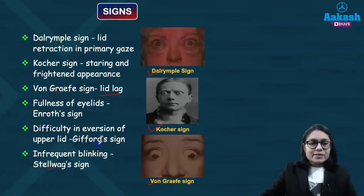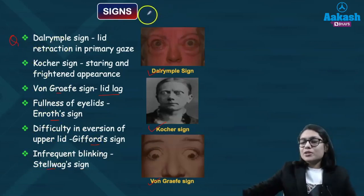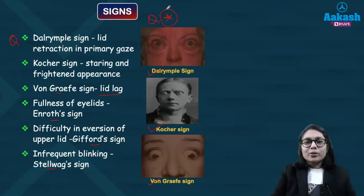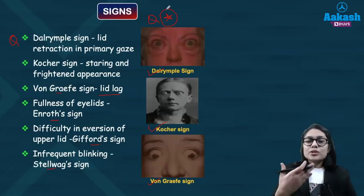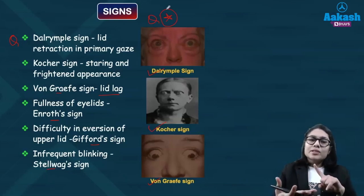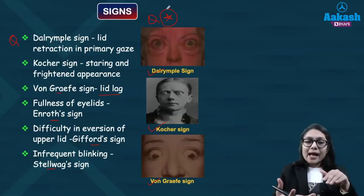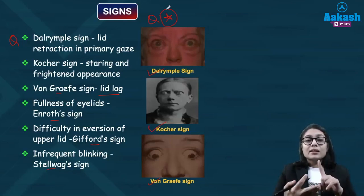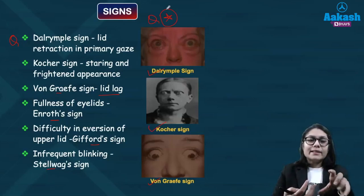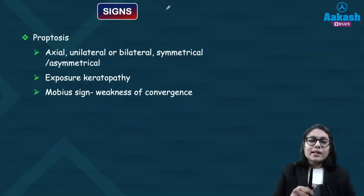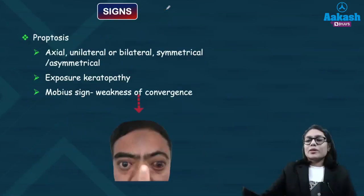To summarize the signs: Dalrymple sign is lid retraction; Kocher sign is the staring appearance; lid lag is von Graefe's sign; Enroth's sign is fullness of the eyelid; Gifford's sign is difficulty in eversion; Stellwag's sign is infrequent blinking. Another sign is weakness of convergence, which is known as Möbius sign. All of these can be asked in MCQs and as image-based questions.